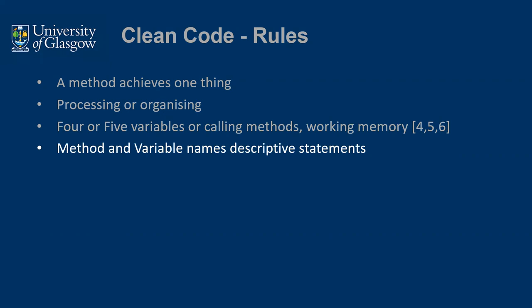Method and variable names should be descriptive statements. You want those method names and variable names to be quite good. By having a method name that's quite descriptive for a complicated piece of code, you avoid the need for a comment. If you create that line of code as a separate method, the method name describes what it's doing, avoiding the need for comments. And by creating that one-line method, although it may seem excessive, if it's a very complicated piece of code, you can test that individual method very well, giving you greater confidence that the complicated code works.